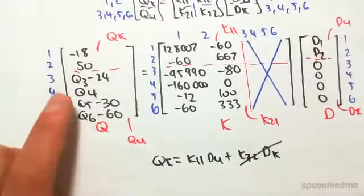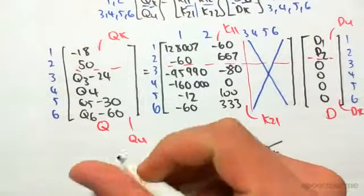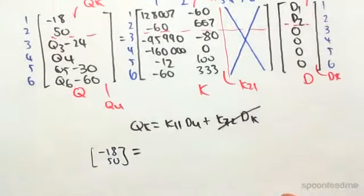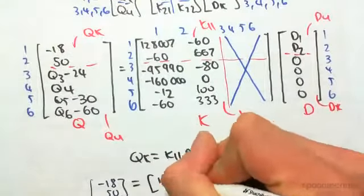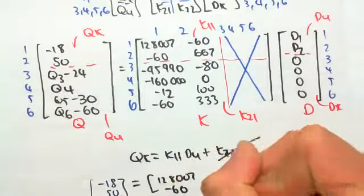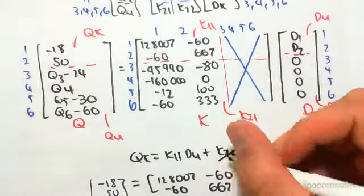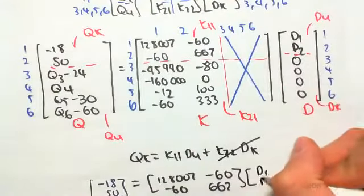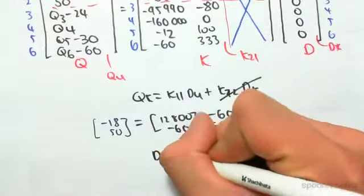If I write this out, the Q known matrix is [-18, 50]. That equals the K11 matrix, which is [128007, -60; -60, 667], times the D unknown matrix [D1, D2]. We're going to solve this to find D unknown.